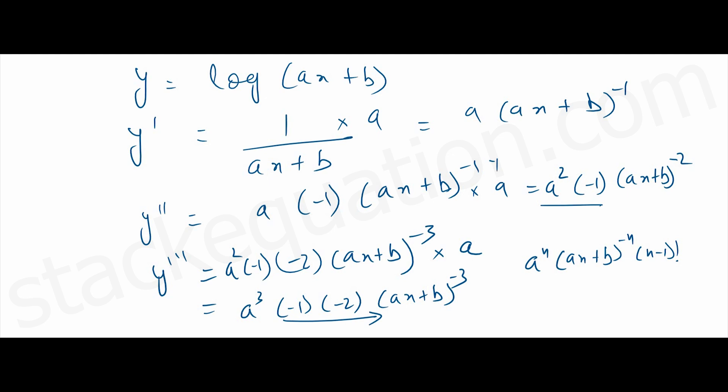For the third derivative, the two negatives combine to give a positive sign, and for the second derivative we have a negative sign. So we write minus one to the power (n minus 1). When n equals two, we get minus one, and when n equals three, we get a positive sign. So this is our generalized expression for the nth derivative of y equals log(ax + b).